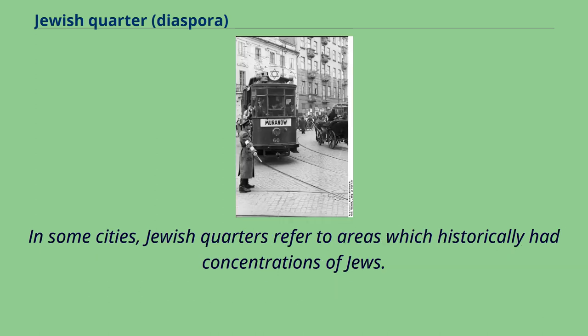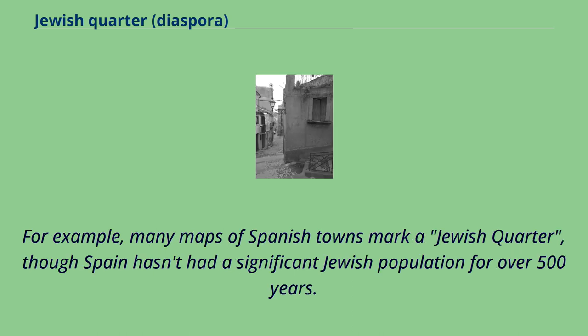In some cities, Jewish quarters refer to areas which historically had concentrations of Jews. For example, many maps of Spanish towns mark a Jewish quarter, though Spain hasn't had a significant Jewish population for over 500 years.